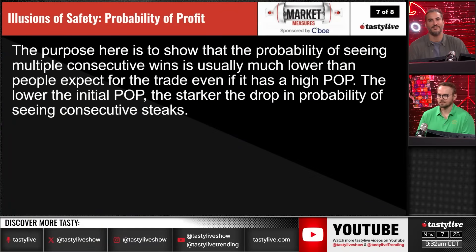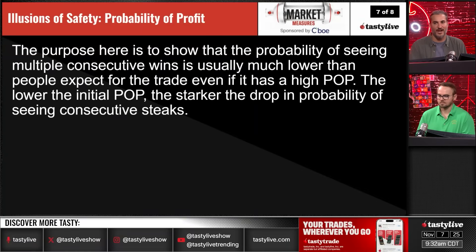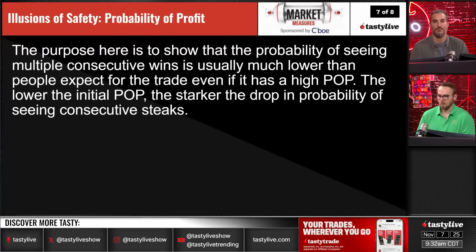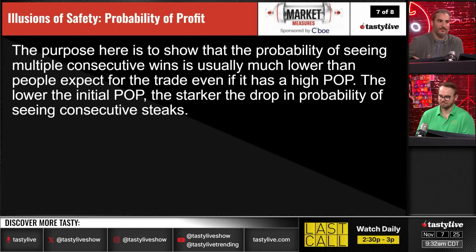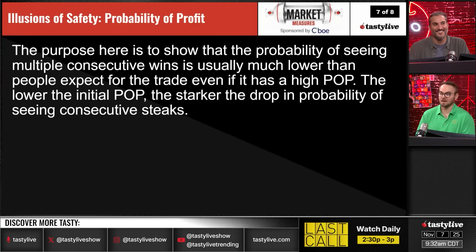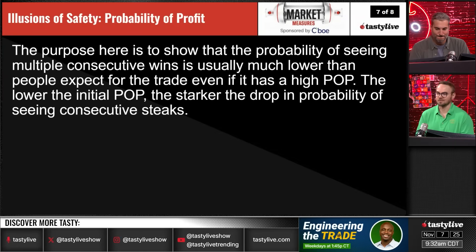The purpose here is to show that the probability of seeing multiple consecutive wins is usually much lower than people expect, even for high POP trades. When you look at many occurrences as a batch, they're not fully independent — the lower the initial POP, the starker the drop in probability of seeing consecutive winning streaks. Trading mostly 70 POP trades should give a wider distribution than 90 POP trades. It's like building a parlay with low probability legs — your odds get juiced against you with each one, and hitting things consecutively is significantly harder than independent results.